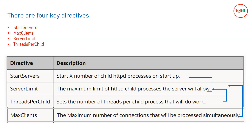The four key directives when defining parameters in your httpd.conf inside your MPM are: StartServers, MaxClients, ServerLimit, and ThreadsPerChild. When you start a web server it first creates a parent process, then creates different threads inside that parent process. StartServers is the number you define to create parent/child processes — it defines the number of httpd child processes spawned on startup.